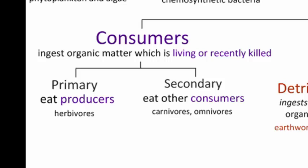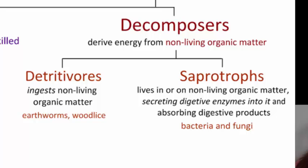Primary consumers eat producers — that would be our herbivores. Secondary consumers eat other consumers, such as carnivores or omnivores that eat both producers and other consumers. A decomposer, on the other hand, gets its energy from non-living organic matter. You have two main types, and this is where we get into some new material: detrivores and saprotrophs. Detrivores are going to ingest non-living organic matter.